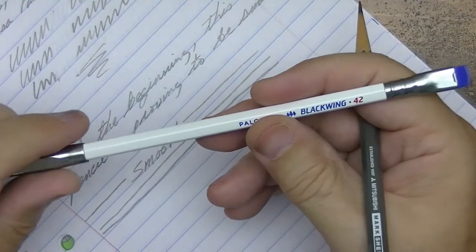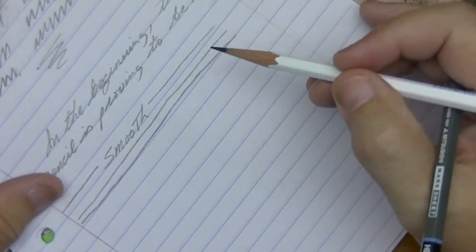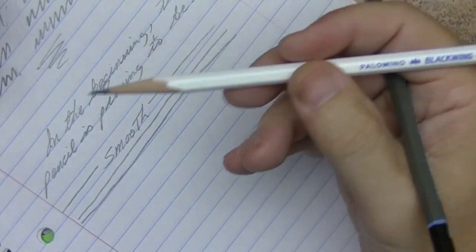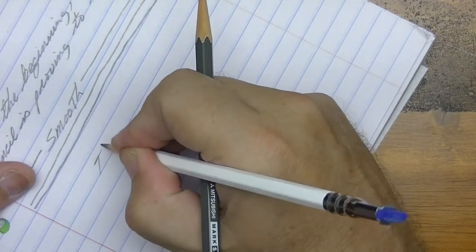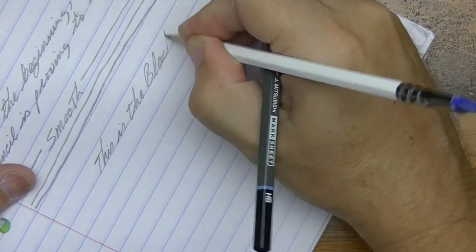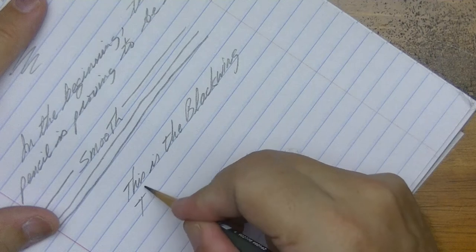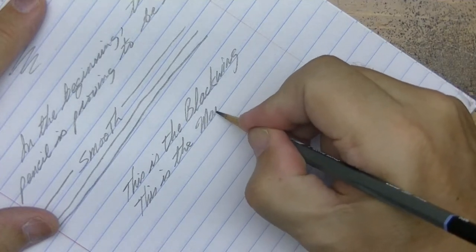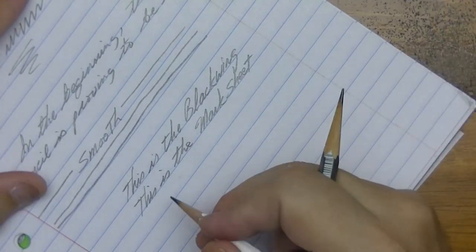As a matter of fact, I happen to have that Blackwing 42 right here because I just finished reviewing it. So I'm going to write these side by side. What better pencil to compare this Marksheet HB to than the Balanced Lead of a Blackwing. So, this is the Blackwing. And this is the Marksheet.